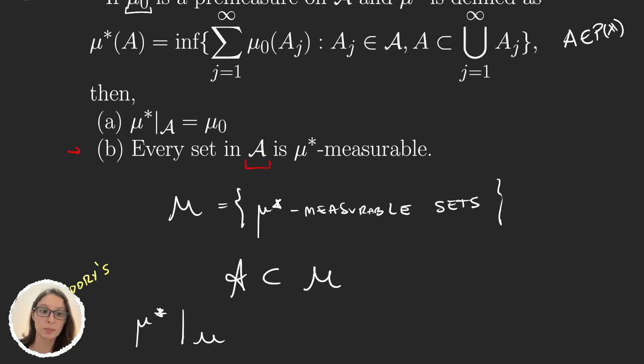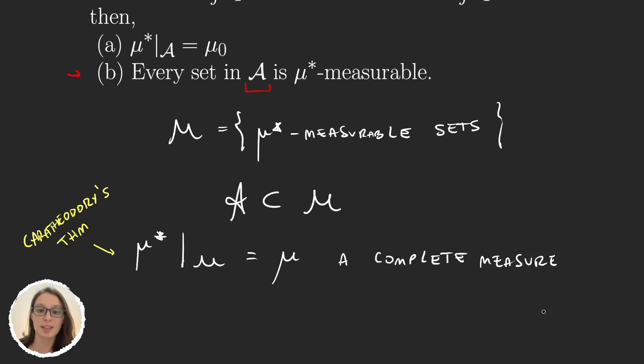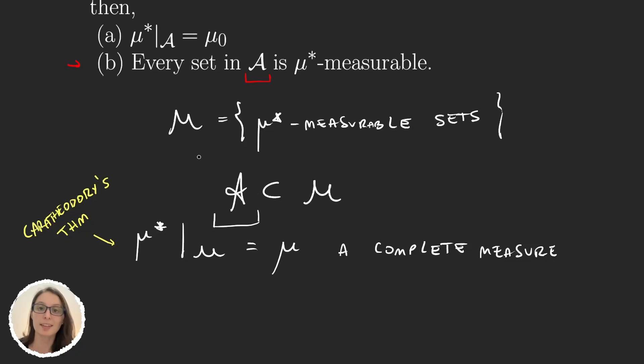And so when we take μ* defined this way and restrict it to the sigma algebra M, using Carathéodory's theorem, we know that this restriction is μ, a complete measure. And now we know that the algebra A that defined my premeasure is a subset of M. So I already know a huge part of M, and it's very easy to work with this new measure μ.